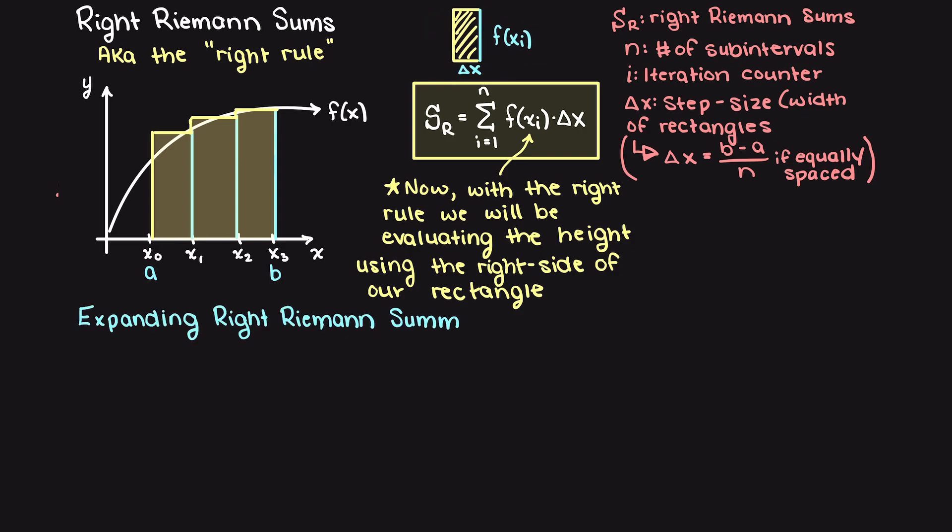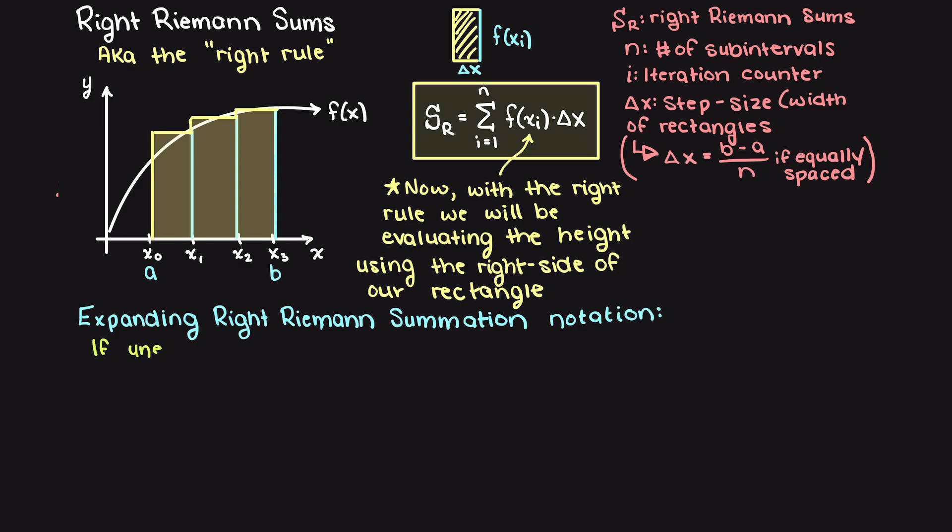Now, let's write out the equation for right Riemann sums if we have unequal step sizes. To reiterate, this means if our rectangles do not all share the same base, or the same delta x.